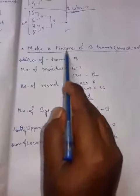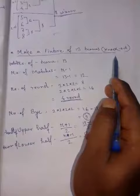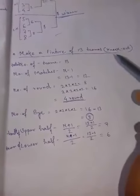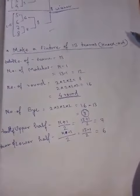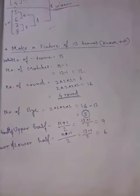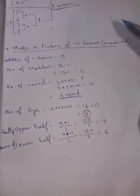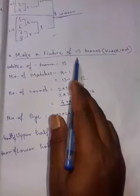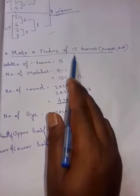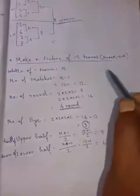You can see here, make a fixture of 13 teams knockout. In the previous video we made a fixture of 8 teams, that is even teams. Now here comes odd teams, and also the main thing is there.